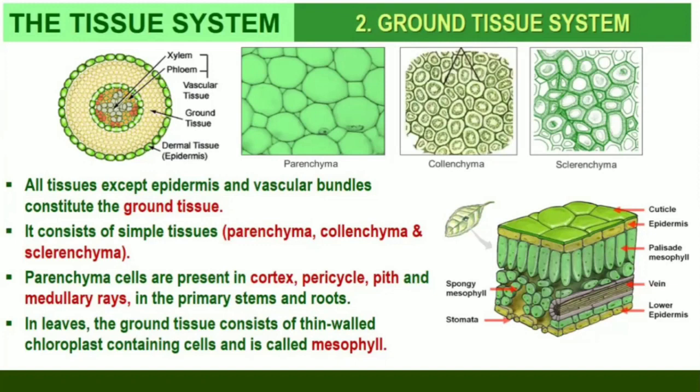The ground tissue system: All tissues except epidermis and vascular bundles constitute the ground tissue. It consists of simple tissues such as parenchyma, collenchyma, and sclerenchyma. Parenchymatous cells are usually present in the cortex, pericycle, pith, and medullary rays in the primary stems and roots. In leaves, the ground tissue consists of thin-walled chloroplast-containing cells and is called mesophyll.